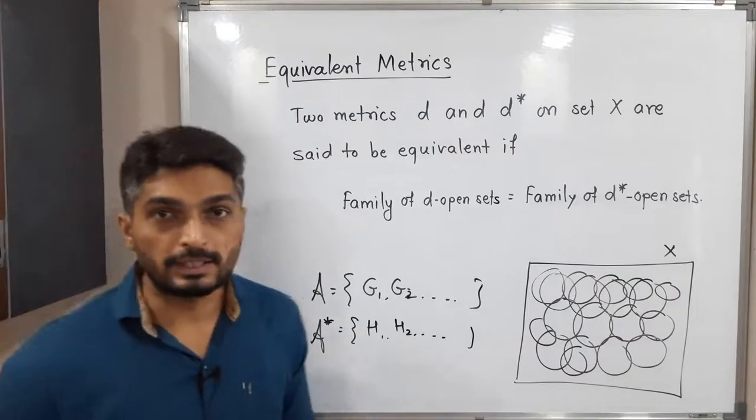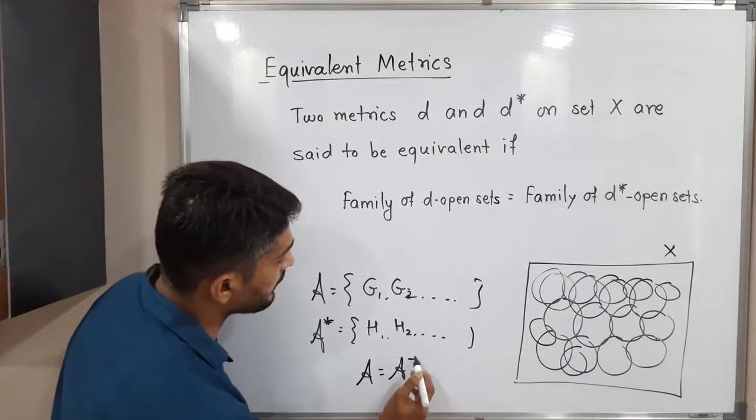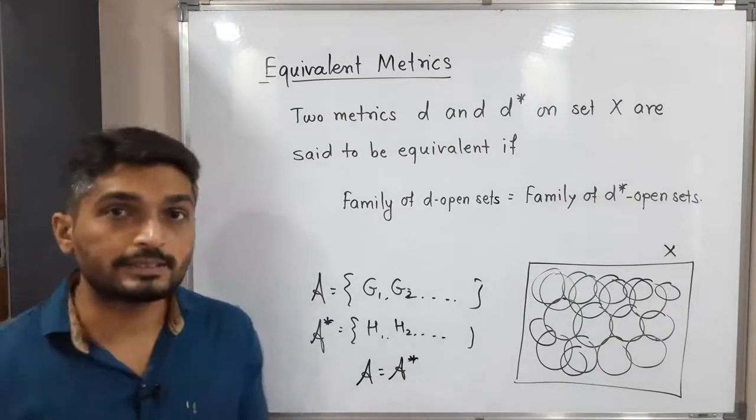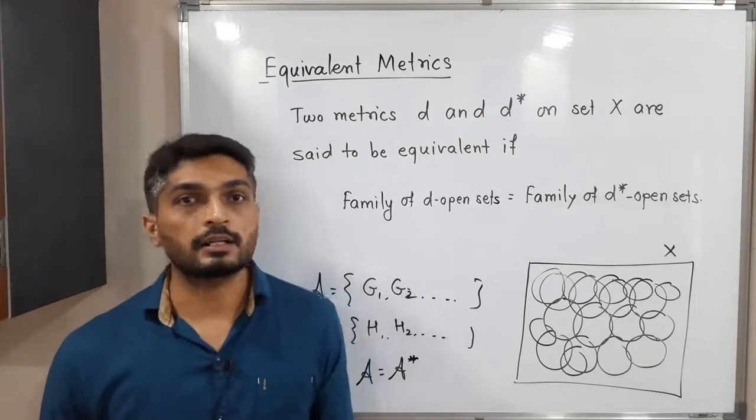I don't know how many sets will be there in A and A*, but see if A is equal to A*, that means family of D-open sets is same as family of D*-open sets. Then we say D and D* are equivalent metrics.